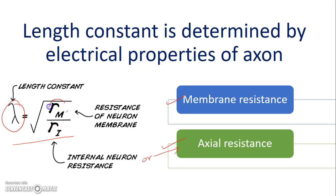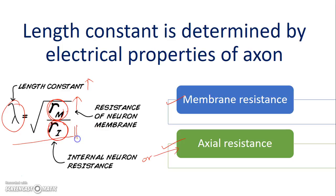When the neuron membrane resistance increases, the length constant will also increase, thereby the velocity will also increase. Or, if the internal neuron resistance — the axial resistance — decreases, the length constant will again increase, thereby increasing the action potential velocity.